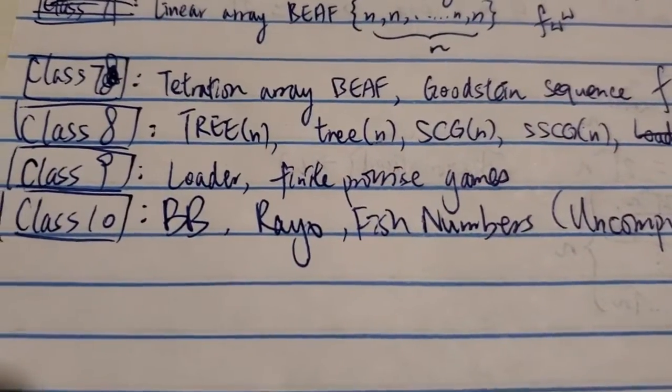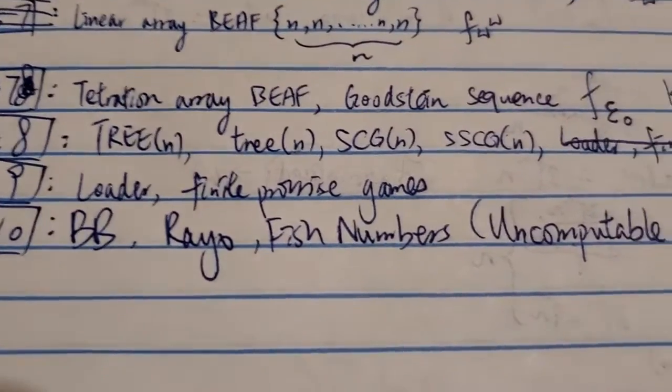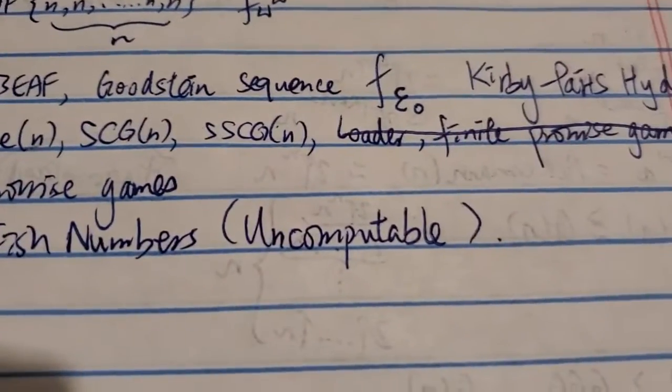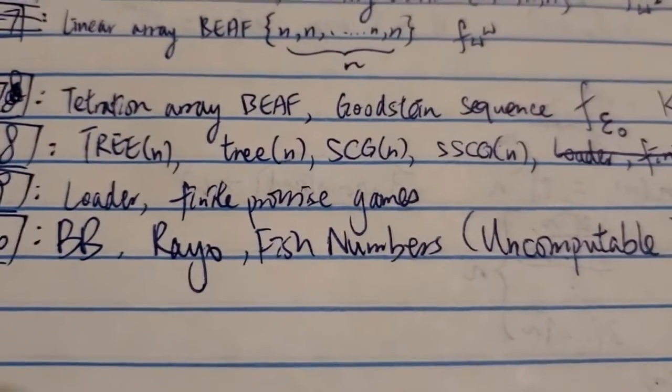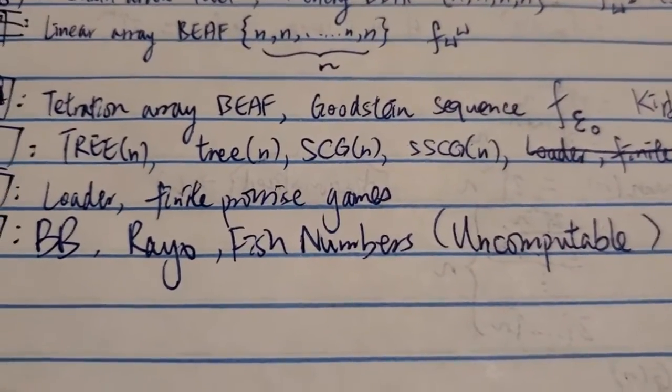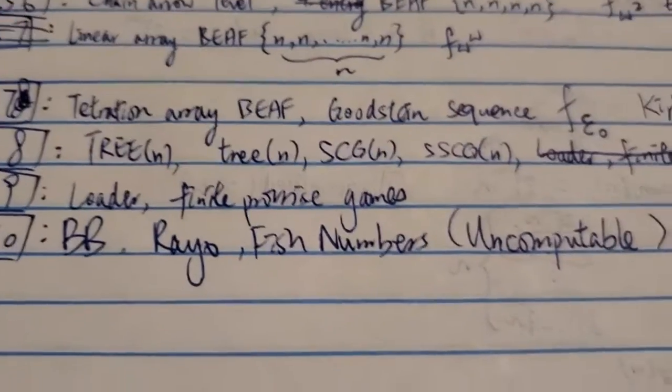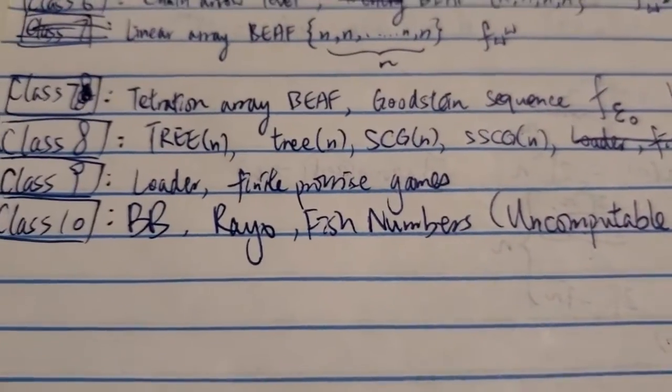Of course, not counting infinity. Infinity is not a number. So these are uncomputable numbers in terms of Googleology terms. Again, those are numbers that are generated from uncomputable function. But in Googleology, they call them uncomputable numbers.